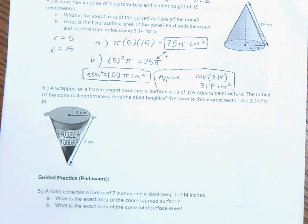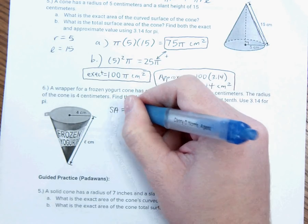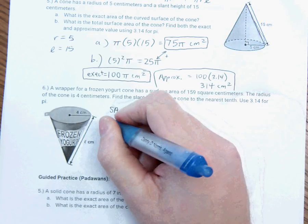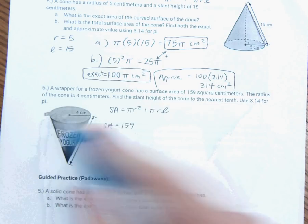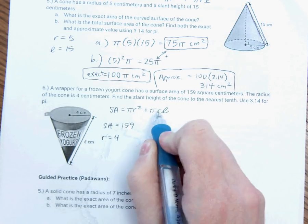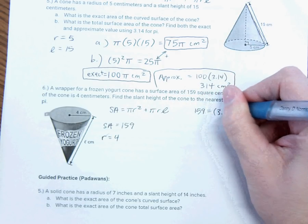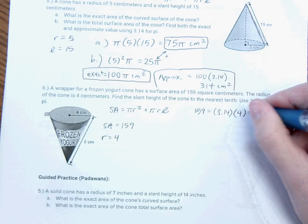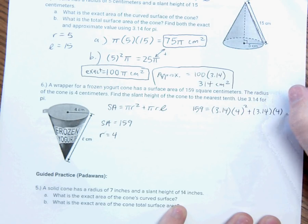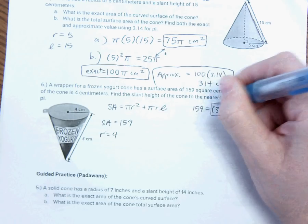A wrapper for a frozen yogurt cone has a surface area of 159 square centimeters. So, let's go back to my equation. It's SA equals pi R squared plus pi R L. So, the wrapper of a frozen cone has a surface area, so I know surface area equals 159. The radius of the cone is 4 centimeters, so I'm going to basically take this and plug in R for all my R's, and we know use 3.14 for pi. So, SA is 159 equals 3.14 times 4 squared plus 3.14 times 4 times L.